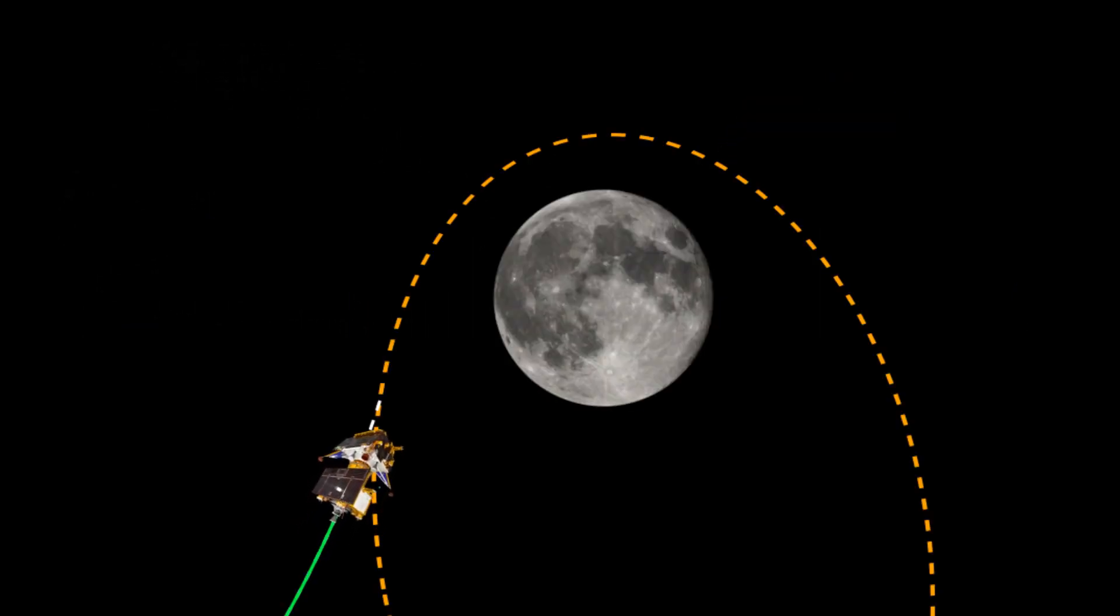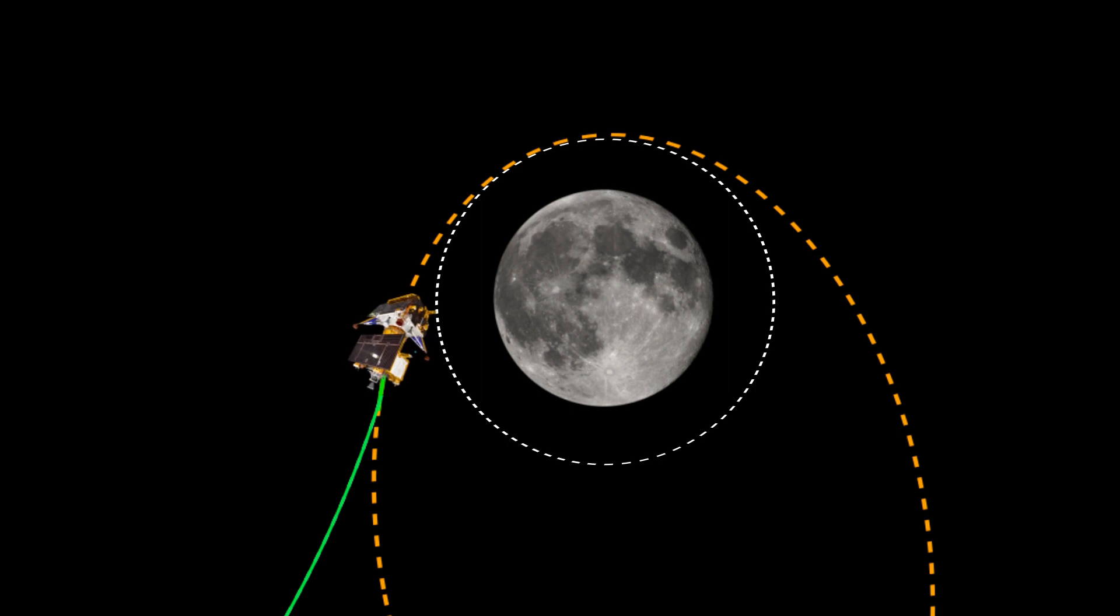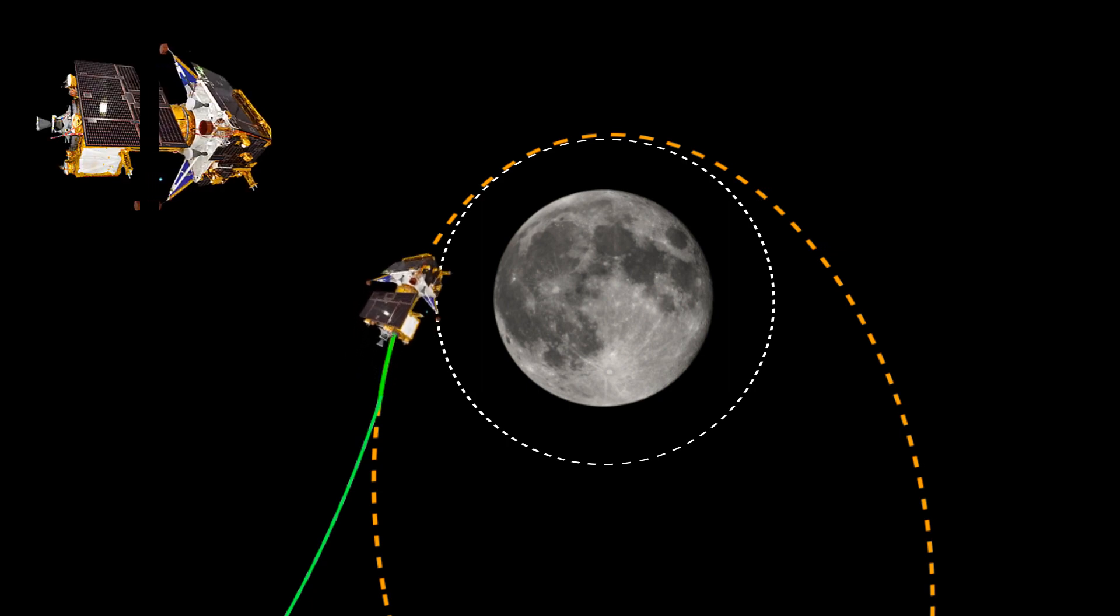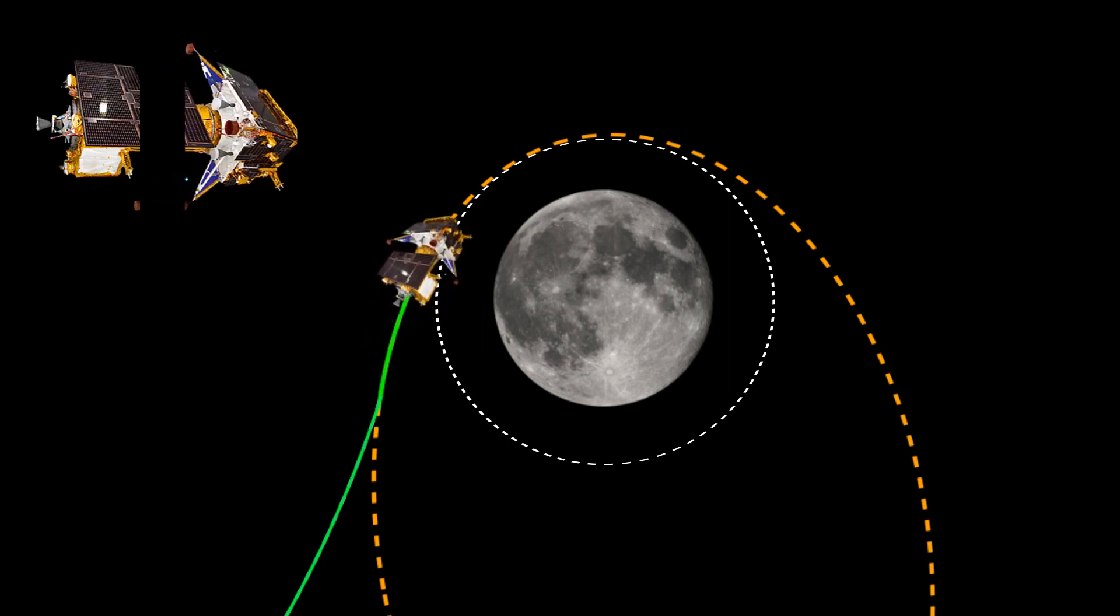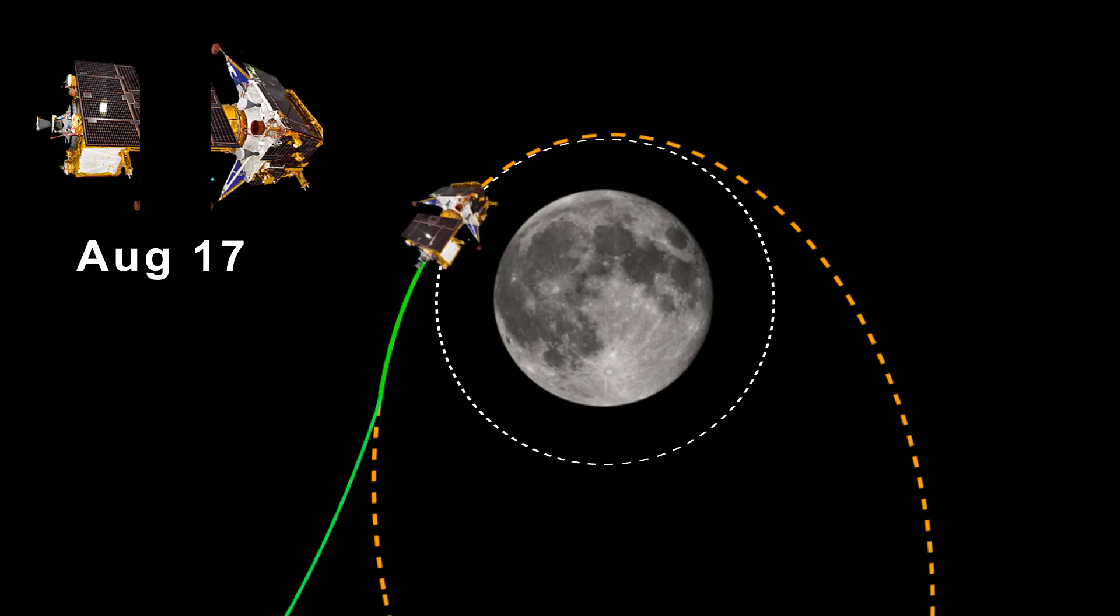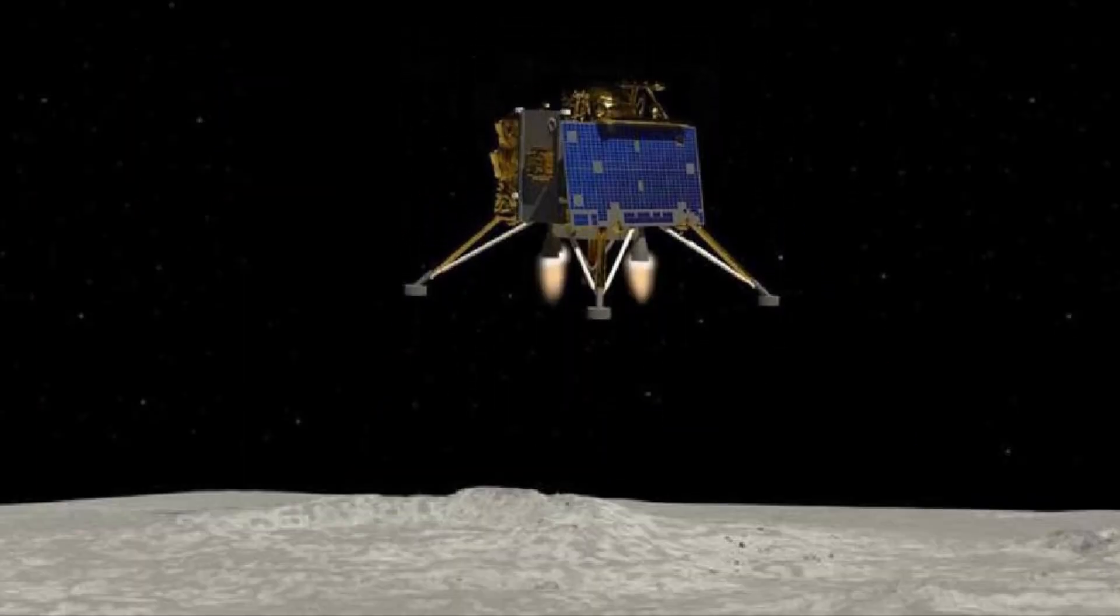Once it reaches the moon's orbit, ISRO will have to carry out some maneuvers to reduce the altitude of the spacecraft and put it in a 100 km circular orbit. At this stage, the propulsion module is separated from the landing module, which is scheduled for August 17, after which the module will be landed on the moon.